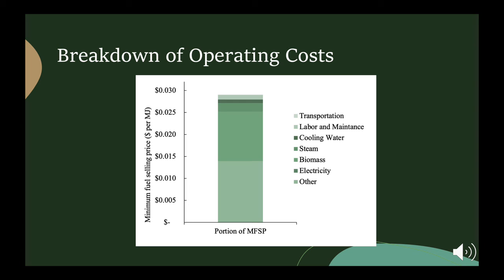We have included a more detailed breakdown of the operating costs associated with production. The greater contributors within this category were found to be the steam used for distillation columns during separation, the price of the biomass, and an 'other' category. The 'other' category includes estimates for operations associated with drying and pretreatment of the biomass not included in our model. These contributions were found to be quite large, which is in agreement with literature, as pretreatment is usually a large portion of production costs and continues to be a major drawback of biofuel production from renewable crops.